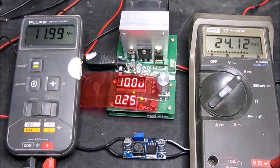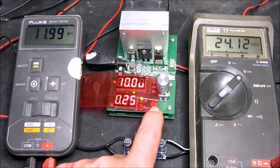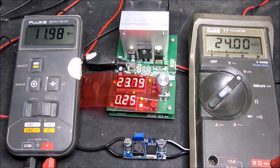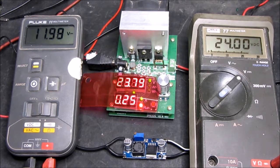So without more ado, let's switch on the load. So it is now drawing the 0.25 of an amp, and we can see that the voltage, which I set earlier, has gone to 24 dead.